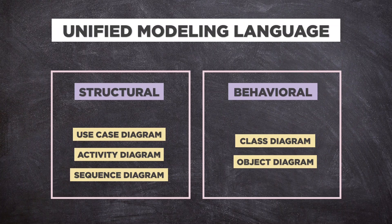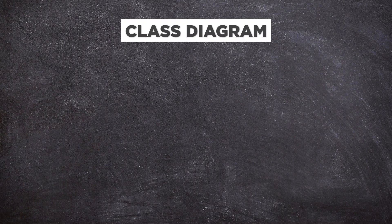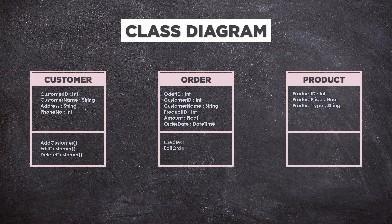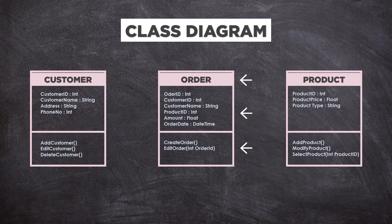Starting with structure diagrams. Class diagrams are the main building block of any object-oriented solution. They show the classes in a system, attributes and operations of each class, and the relationship between classes. A class has three parts: name at the top, attributes in the middle, and operations or methods at the bottom. Classes are grouped together to create class diagrams, and different types of arrows show the different relationships between classes.